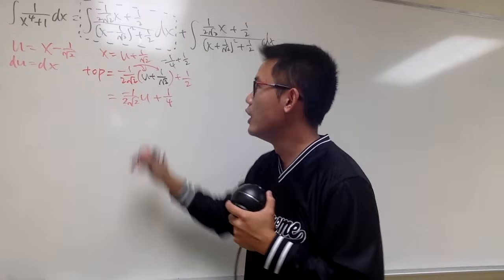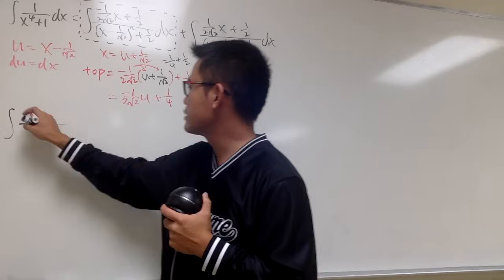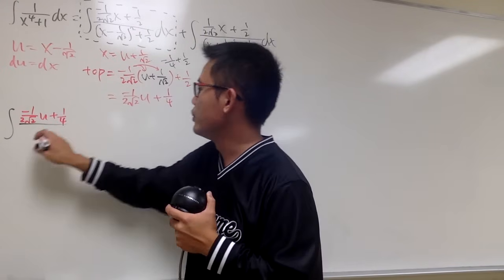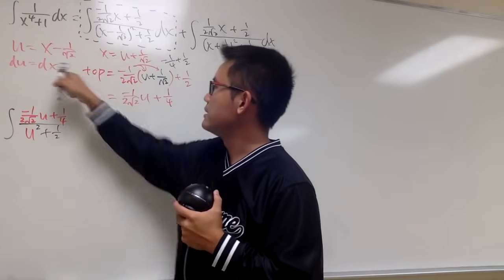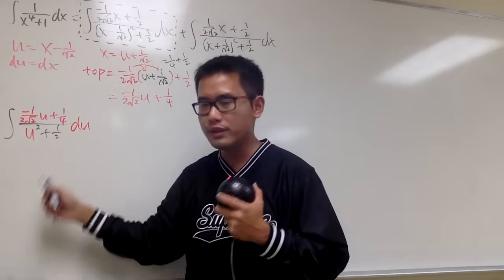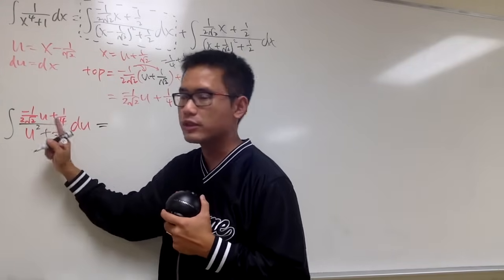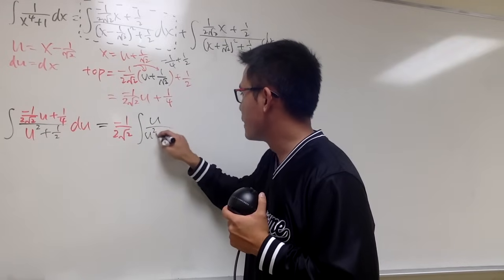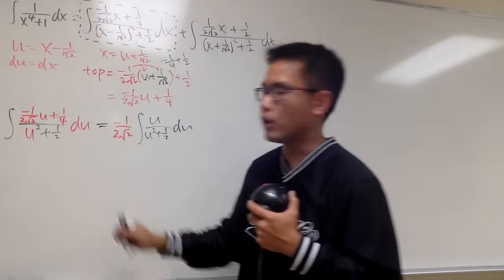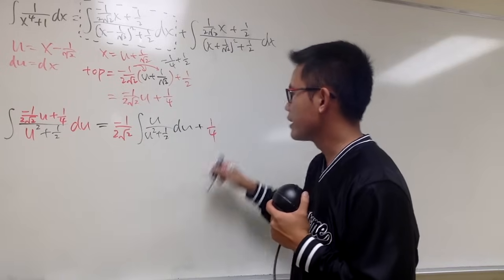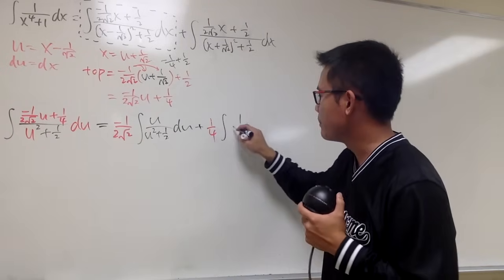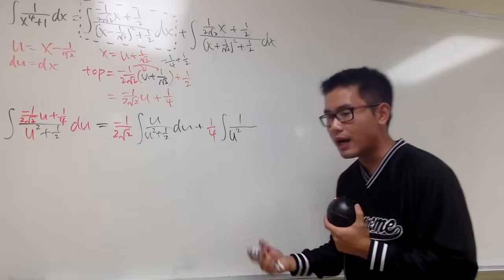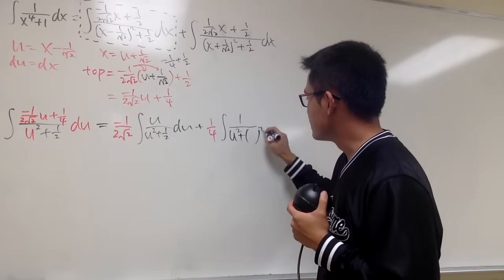Now in the u-world, we split into two integrals: negative 1 over 2 square root of 2 times the integral of u over u squared plus 1 half du, plus 1 over 4 times the integral of 1 over u squared plus 1 half du. For the first, use a w-substitution with w equal to the denominator; for the second, recognize the arctangent formula: integral of 1 over u squared plus a squared equals 1 over a times arctan of u over a, where a equals 1 over square root of 2.